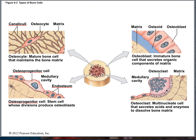Osteoclasts crush, right? It looks like a big macrophage — a big eater. So he breaks down the bone matrix and releases whatever calcium is needed for use somewhere else.